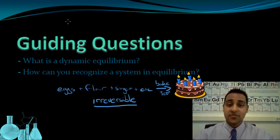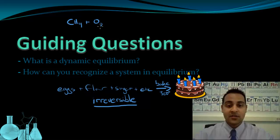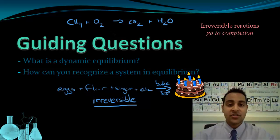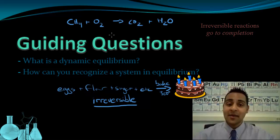Combustion reactions are another example of a process that's irreversible. If you take a hydrocarbon, say CH4, and we combust it — react it with oxygen — we get carbon dioxide and water as products. This reaction is irreversible as well; there's no way to get the methane and oxygen back from the carbon dioxide and water products. When we talk about chemical reactions, we sometimes say that they go to completion, meaning all the reactants are used up to form the maximum amount of product.